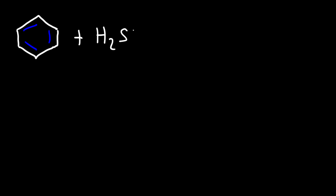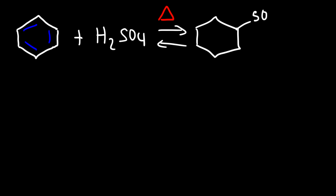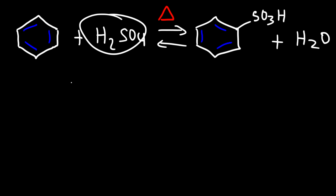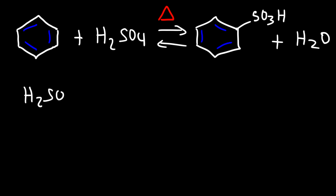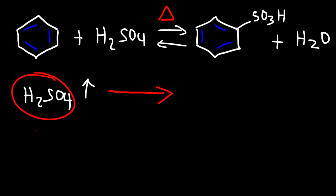Let's put this all together and see how this relates to Le Chatelier's principle of equilibrium. Benzene reacts with sulfuric acid in a reversible reaction to produce benzene sulfonic acid and water as a side product. Anytime you increase the concentration of a reactant, you can drive the reaction forward. So if we increase the concentration of sulfuric acid, according to Le Chatelier's principle, we can drive the reaction to the right, producing benzene sulfonic acid. If you want to sulfonate the benzene ring, you need to use concentrated sulfuric acid — that's going to favor the production of benzene sulfonic acid.